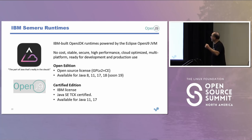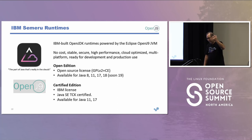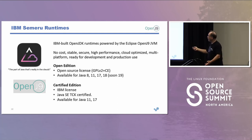OpenJ9 comes with IBM's distribution of Java, called Semeru Runtimes. Java was open-sourced about 10 years ago and there are now multiple distributions: Amazon Corretto, Oracle's, Red Hat's, Microsoft's, and IBM's — called Semeru Runtimes. And if you're wondering about the name: Semeru is the tallest mountain on the island of Java.